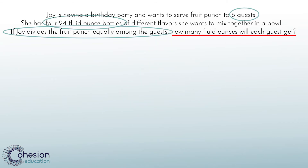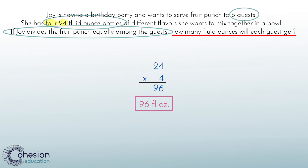In order to solve this problem we will first need to multiply 4 by 24. This is because we have four different bottles with 24 fluid ounces in each, and this will tell us how many total fluid ounces are going into the punch. When we follow the steps of multiplication and multiply 24 by 4, we get a total of 96 fluid ounces. These steps were covered in the lesson 'Multiply by One-Digit Numbers' — please refer back at any point.